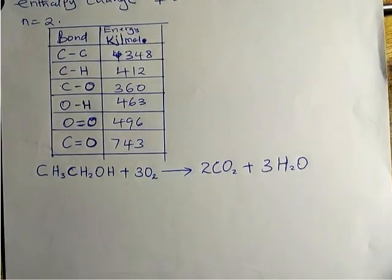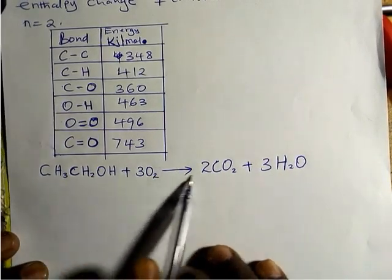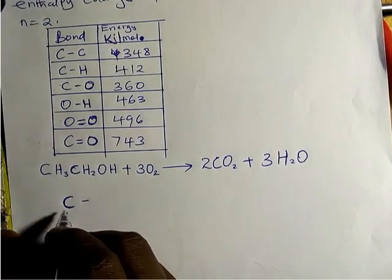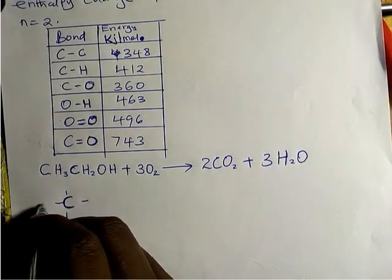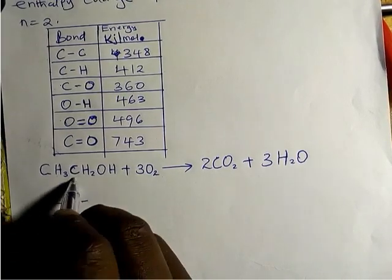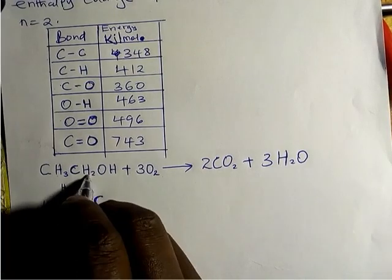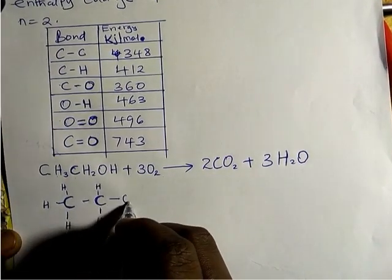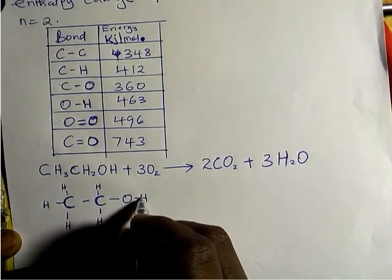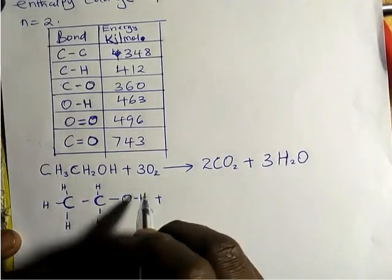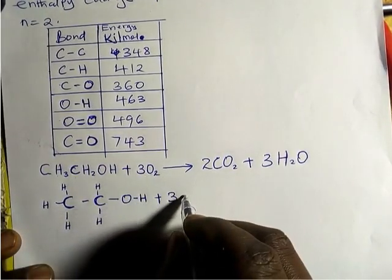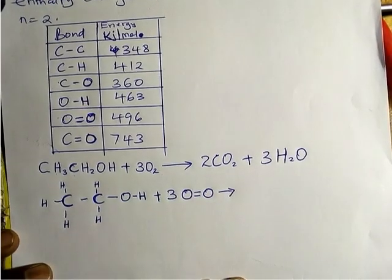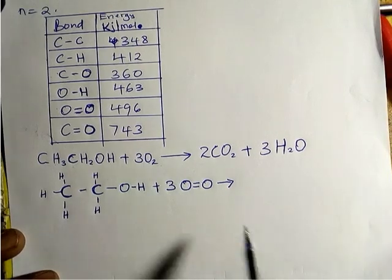For ethanol, we open the structure: the first carbon is surrounded by three hydrogens, the next carbon has two hydrogens, and then we have the OH group. Plus three oxygen molecules — remember oxygen has a double bond, O=O. You need to understand valence bonding well to do this. This is a covalent bond between oxygen and oxygen.